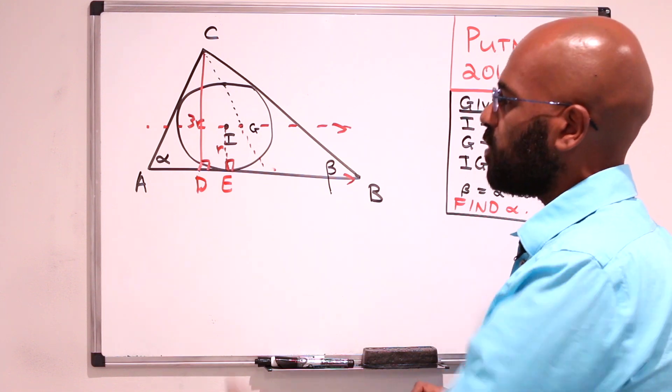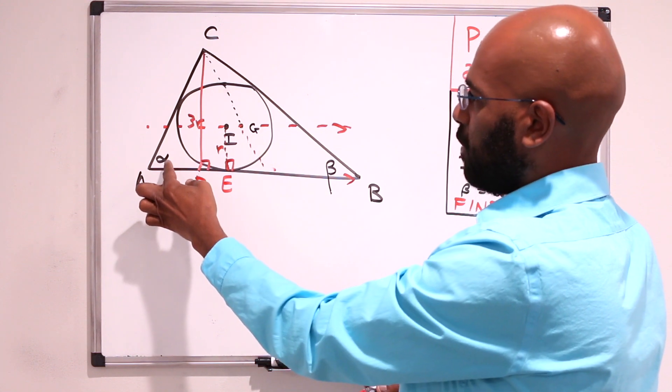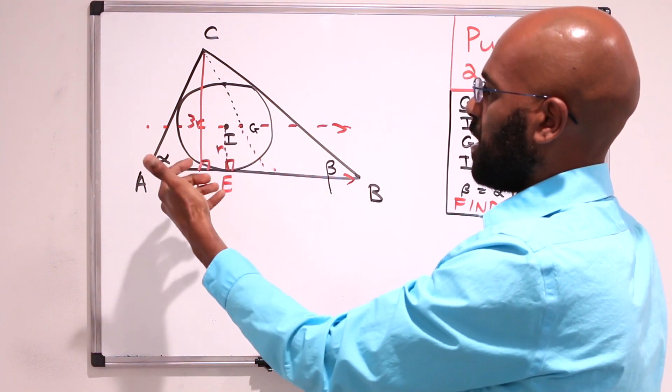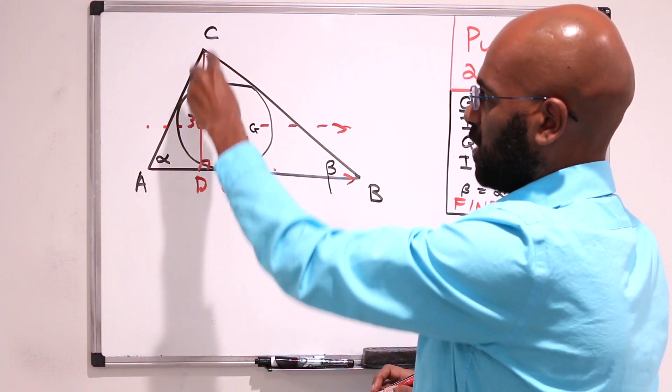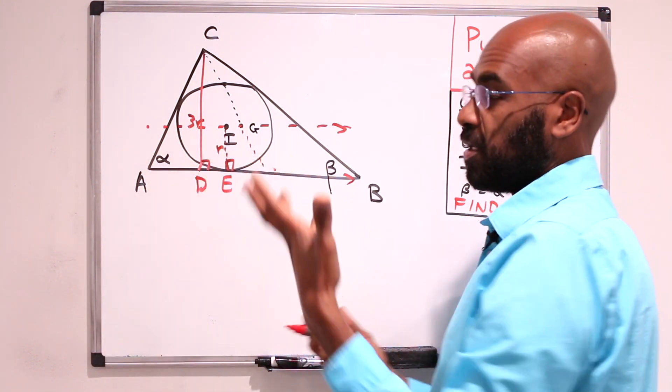So why bother considering this height in the first place? Well, if we're gonna try to find out what this angle alpha is, it might help to figure out what this height is and then use trigonometry on these two triangles in some way.